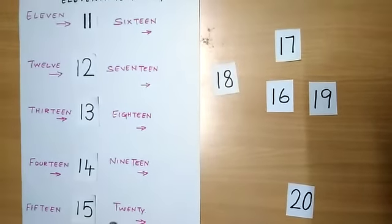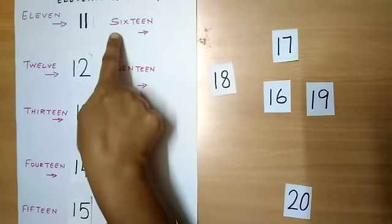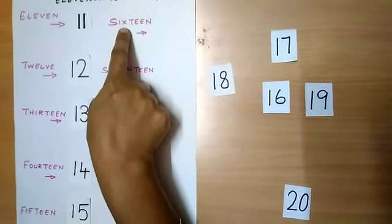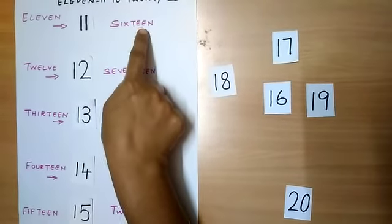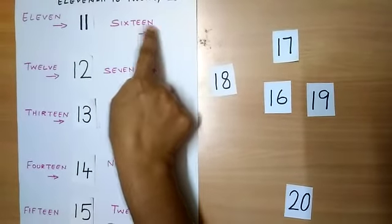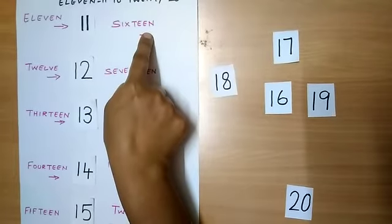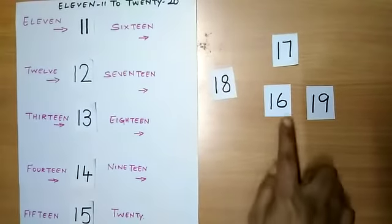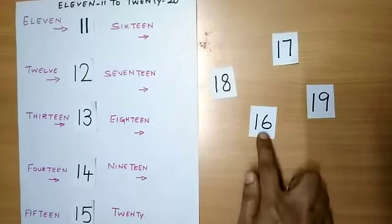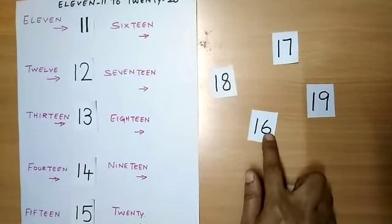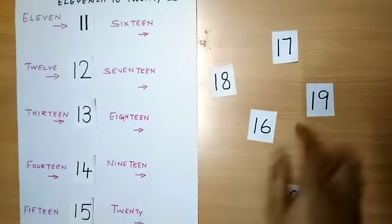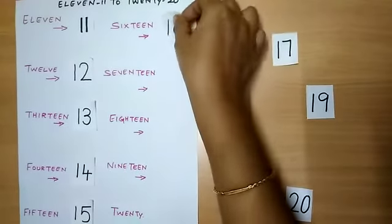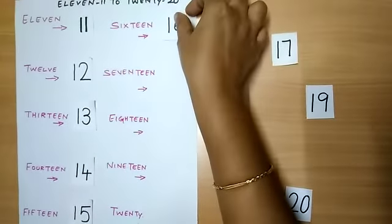Next number: S-I-X-T-E-E-N. That is 16. So where is number 16? This is number 16. 1 and 6 makes number 16. So let me arrange number 16 to number name 16.